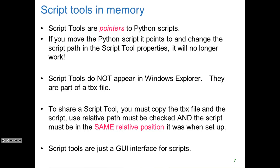Another thing to note: if you go into Windows Explorer and look at the scratch directory, you don't see the script tool itself — you see the .tbx file and the .py file. The script tool is encoded within the tbx file. To share a script tool, you must copy the tbx file and the script, use a relative path, and make sure the 'use relative path' checkbox is checked.